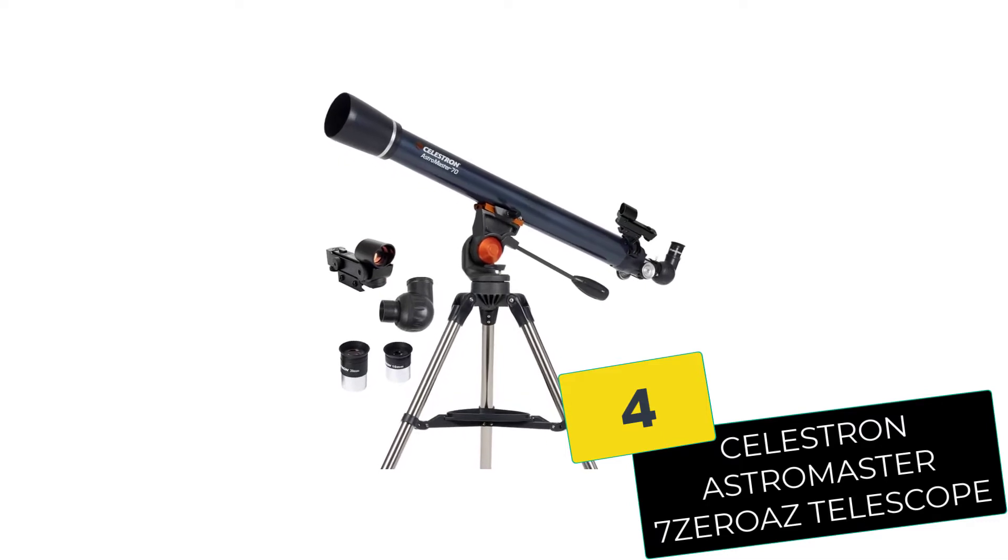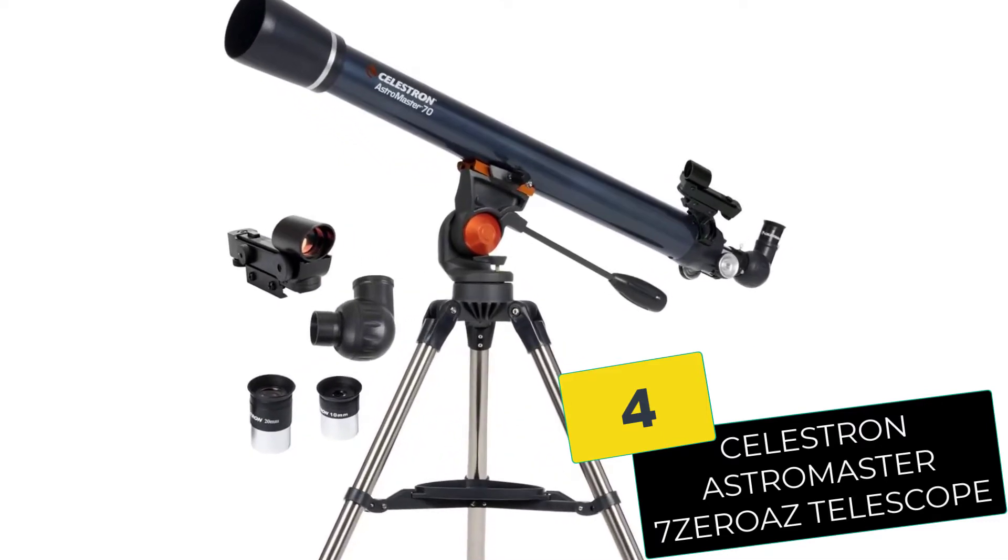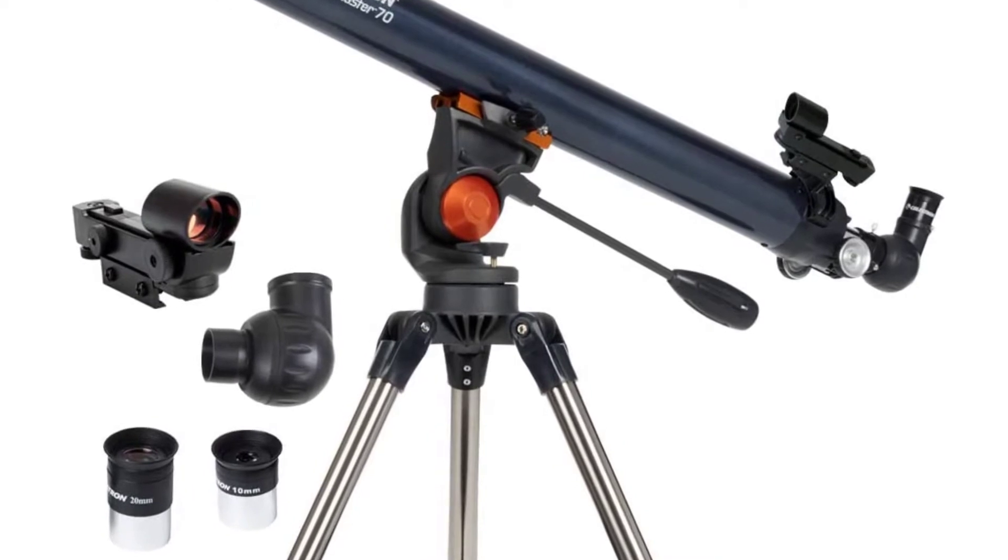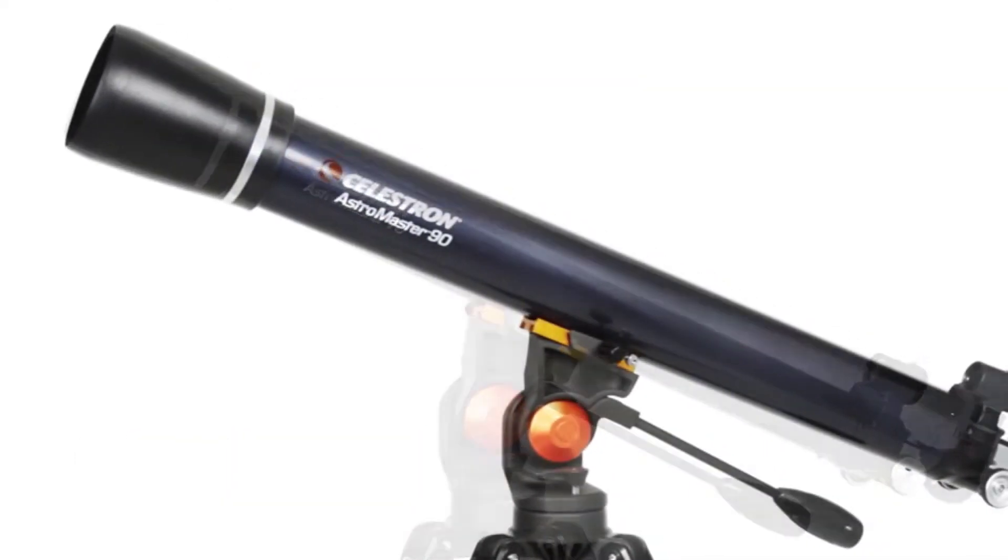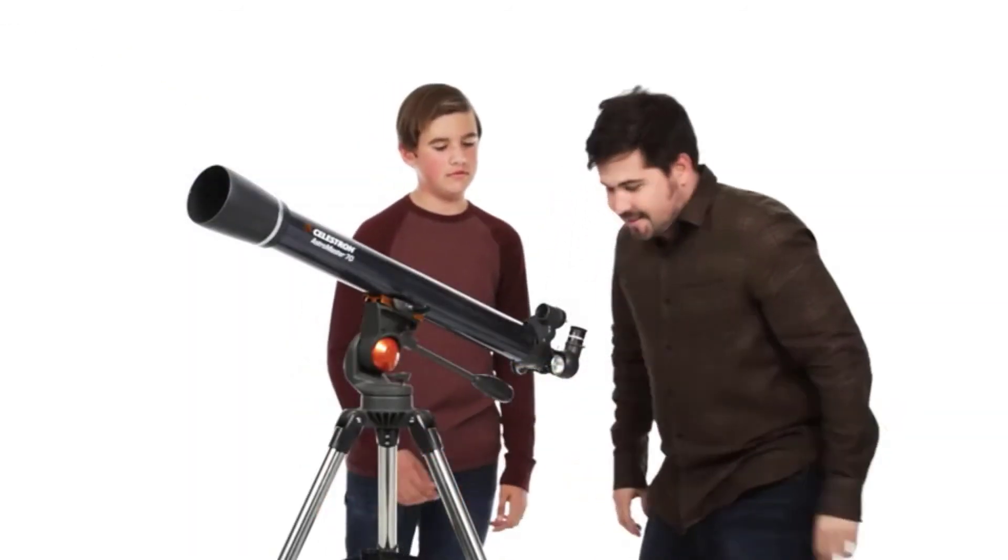Moving on at number 4, we have the Celestron Astromaster 70AZ telescope. This refractor telescope comes with fully coated glass optics, an adjustable height tripod and a ton of power and user-friendliness.